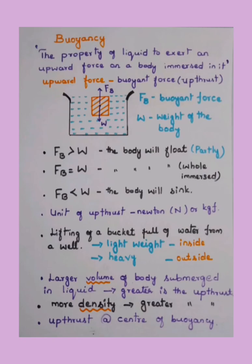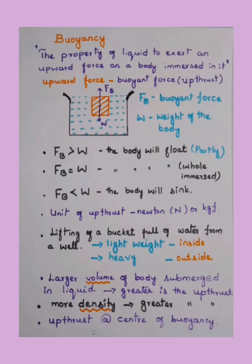In this diagram, there is an object dropped in a container which contains liquid. There are two directions of forces: fb, called the buoyant force, and W, representing the weight of the body. The weight of the body acts downward and the buoyant force acts upward. There are three main conditions for whether an object floats or sinks.